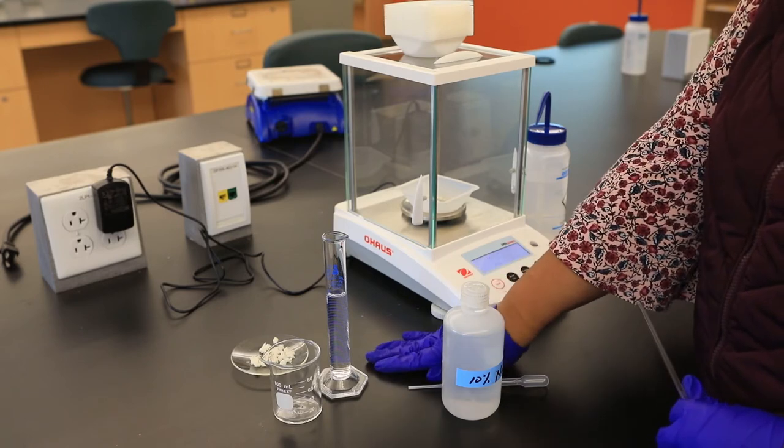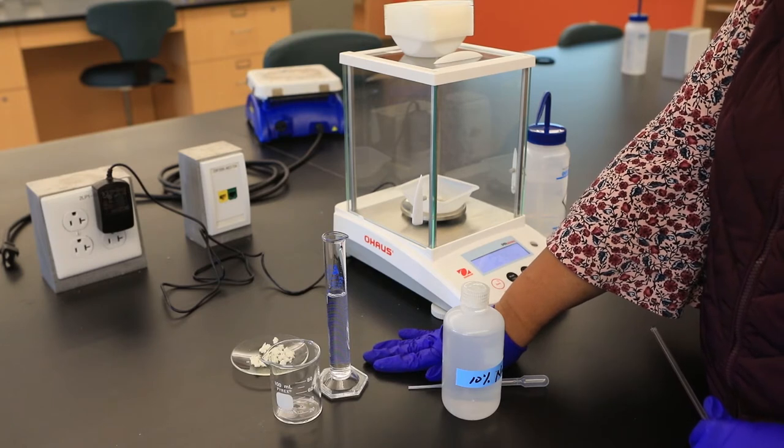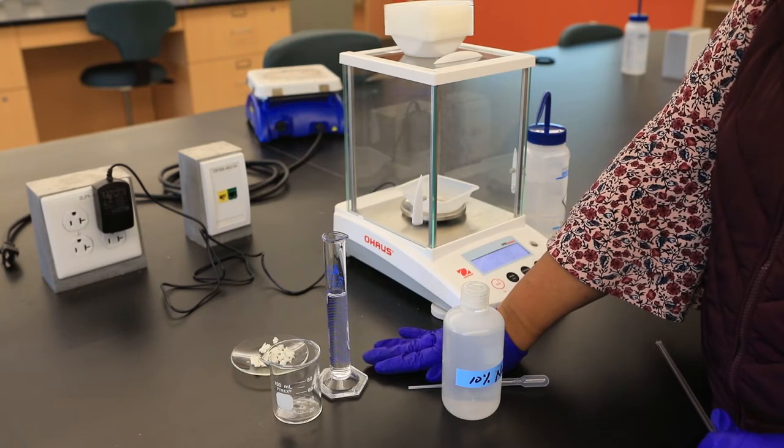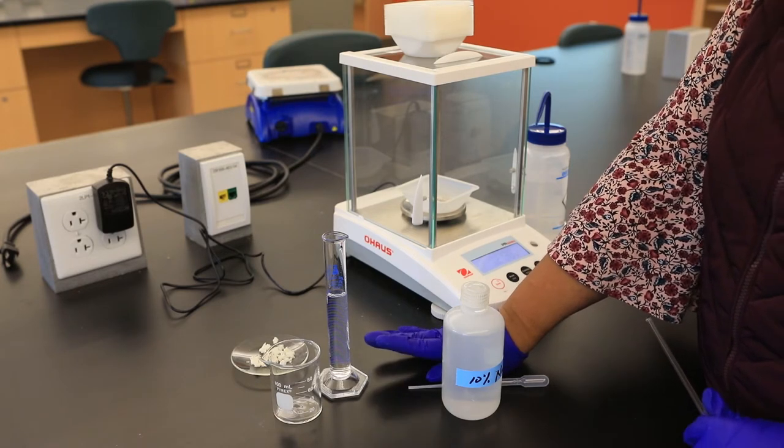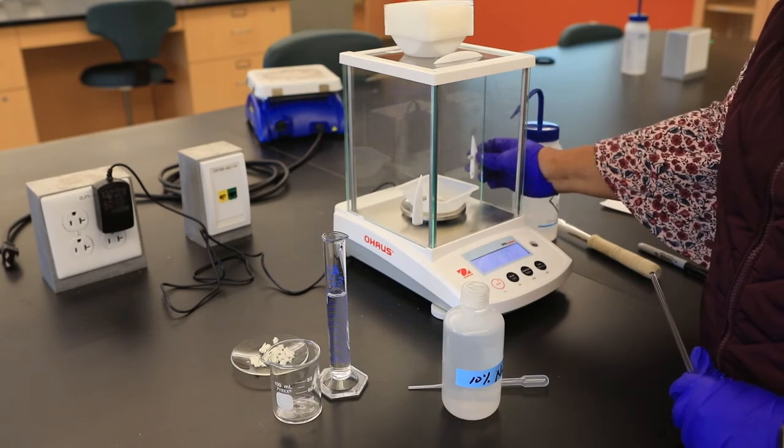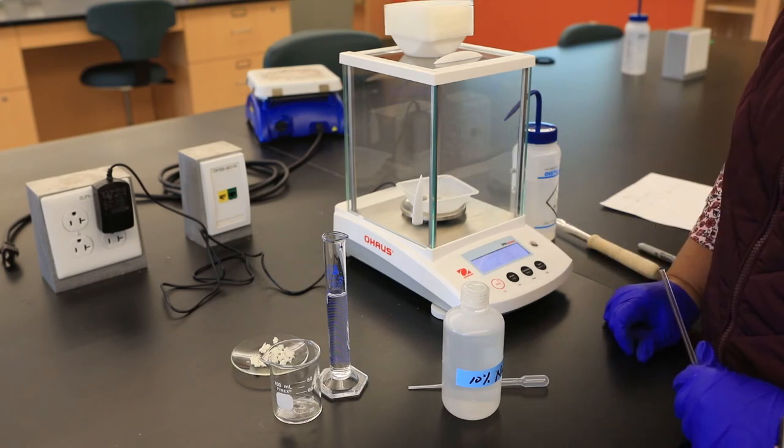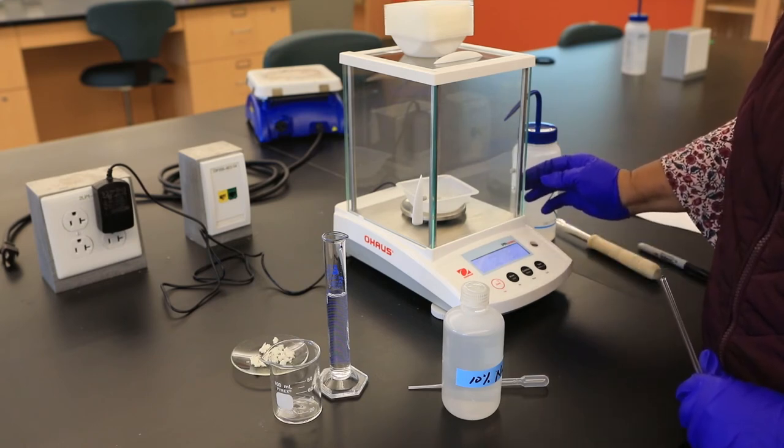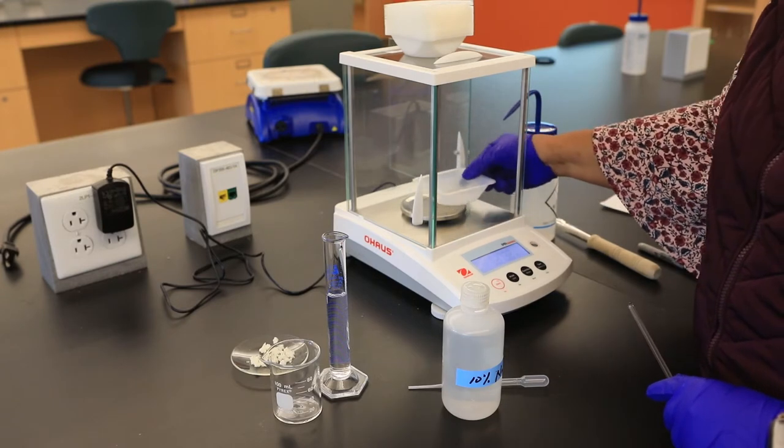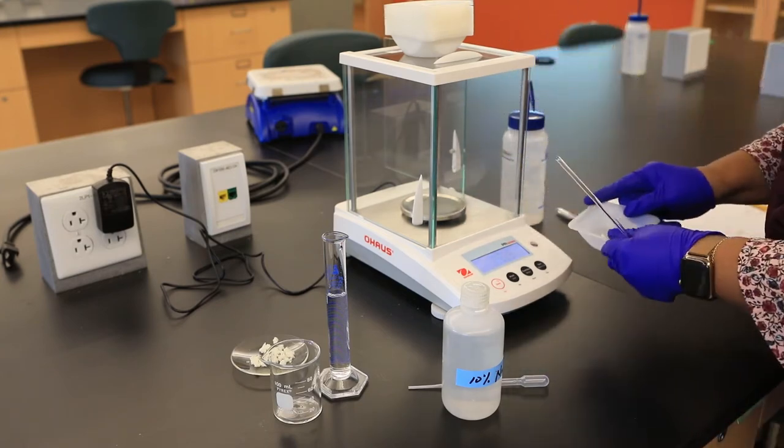In this part of the experiment, we're going to prepare a solution of casein for our tests. We'll be completing three tests: the biuret test, the coagulation test, and the test for heavy metals. Before we can do those tests, we need to prepare the casein solution. I've already pre-weighed exactly 0.273 grams of casein - the casein that was extracted earlier from our dry milk.